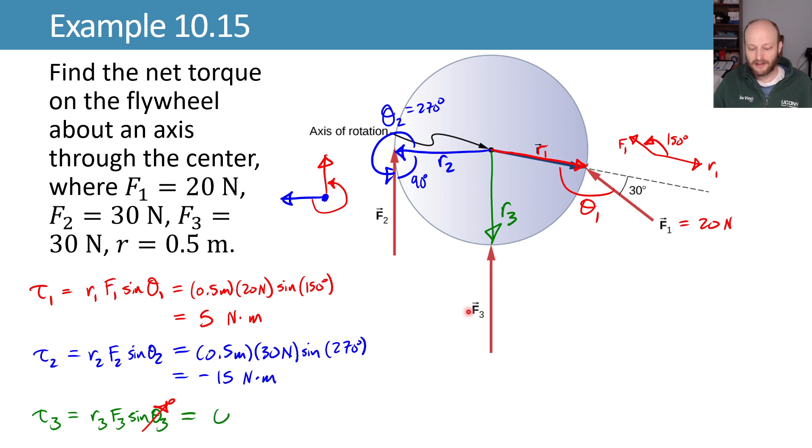We can now add these three things together and end up with our torque of 5 minus 15, or negative 10 newton meters. We can represent that as negative 10 newton meters in the k-hat direction, or if I want, say it's going to be 10 newton meters clockwise.